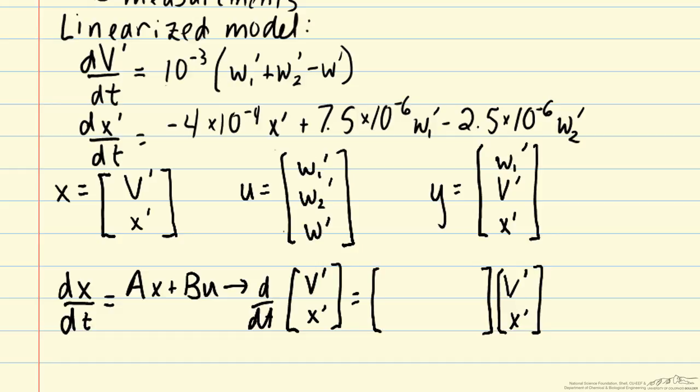The first row in the matrix represents our dV prime/dt term. So dV prime/dt is equal to 10 to the minus 3 times W1 prime plus W2 prime minus W prime. It doesn't actually depend on V prime or X prime. We will have zeros multiplying the V prime and X prime terms. And then in our second equation we have dX prime/dt. And in that case we do have an X prime term. We do not have a V prime term on the right hand side.